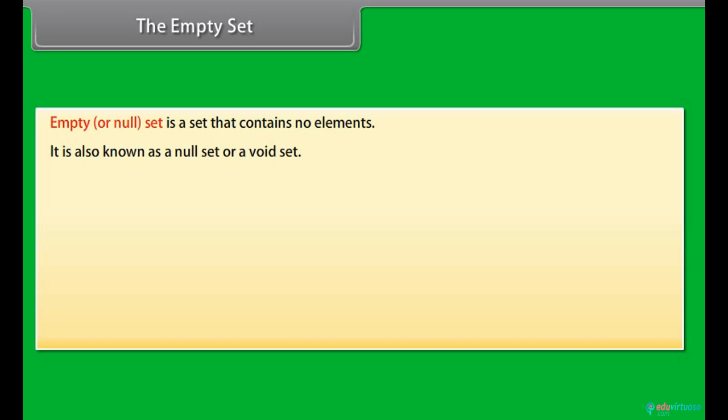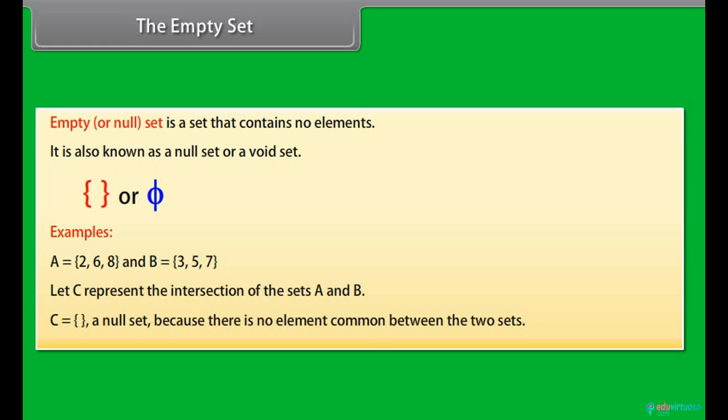Empty set is denoted by these symbols. Examples: A is equal to 2, 6, 8 and B is equal to 3, 5, 7. Let C represent the intersection of the sets A and B. C is equal to a null set because there is no element common between the two sets.